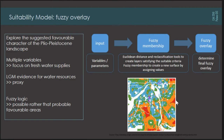I'm currently working on a suitability model based on fuzzy logic to explore the suggested favourable character of the exposed Pleistocene landscape in the Aegean, using multiple variables with a focus on freshwater supplies. Because evidence from the lower Pleistocene is very poor, I'll use some Last Glacial Maximum evidence as a proxy. I selected fuzzy logic because it talks about possibilities rather than probabilities in terms of favourable environments, and this fits better with the fragmented nature of the Aegean material.